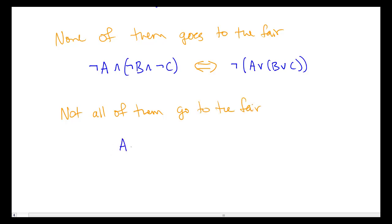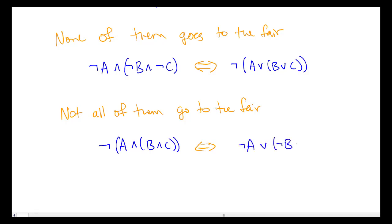We can take all of them go to the fair — which we already saw above — take that whole thing and negate it. Again, given De Morgan's equivalence, we could also have written this as: either not A or not B or not C.